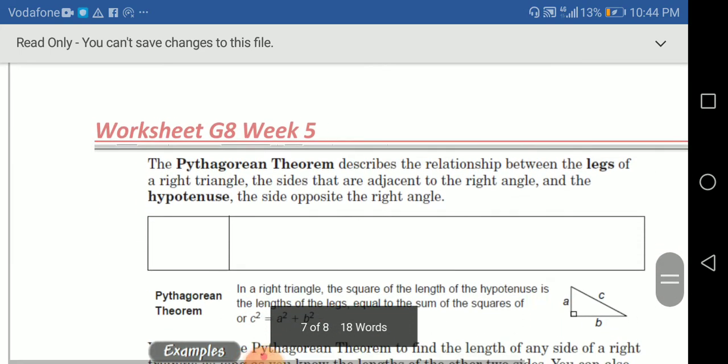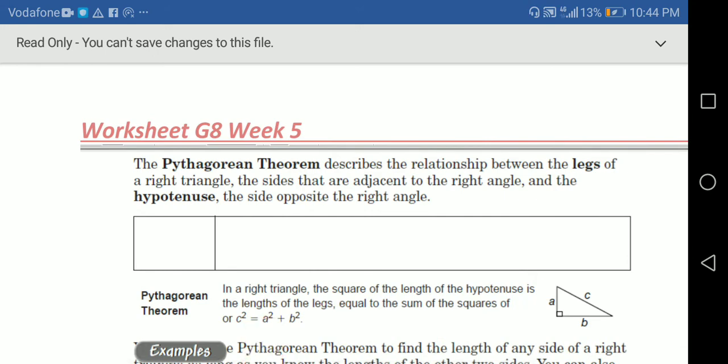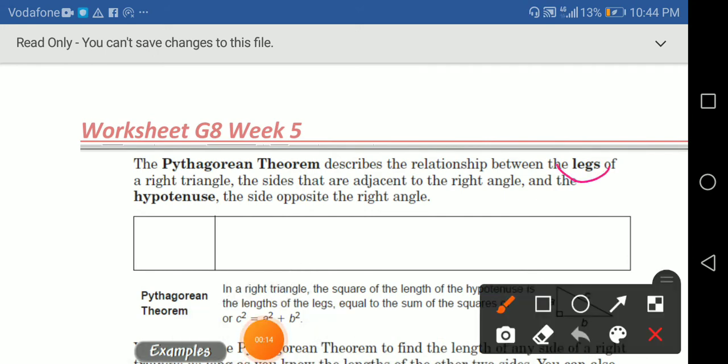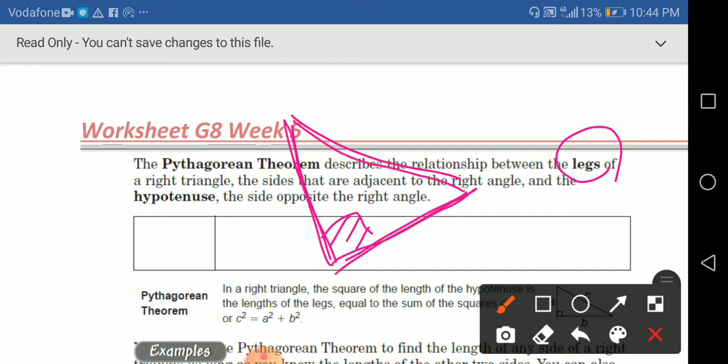The Pythagorean Theorem describes the relationship between the legs of a right triangle. So I have here a right triangle, as you see. And I have here in the right triangle, I have something called hypotenuse. So the side that is opposite to the right angle is called the hypotenuse, as you see. And we have here two other legs.